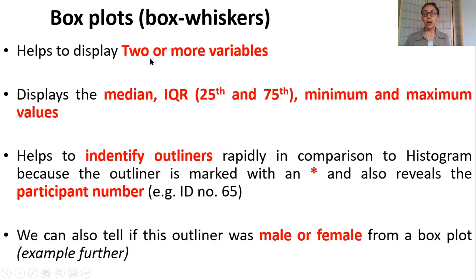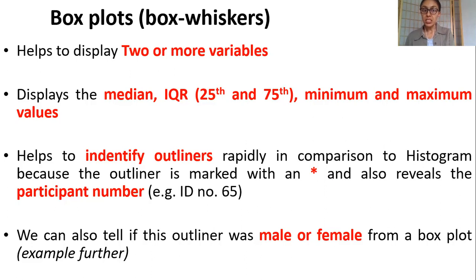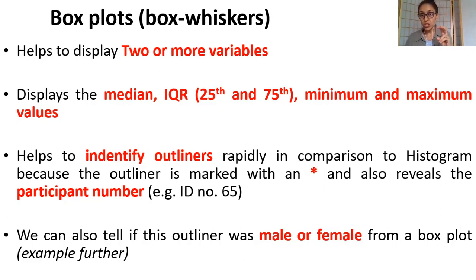Then you have box plots. They display two or more variables and can be shown with means and 95% confidence intervals, or with medians and interquartile ranges. You can also have minimum and maximum values reported. Importantly, box plots are the best for identifying outliers — they give you a star marker along with the individual case number. For example, participant number 65 might be an outlier, and you can go to that participant's record to investigate whether the age was entered as 81 instead of 18 — a simple typo. You then decide whether the case is influential.